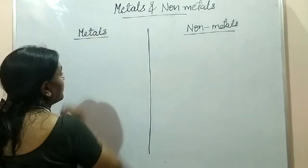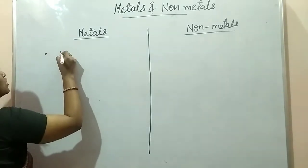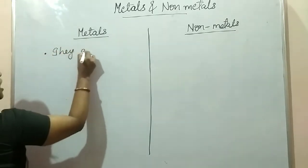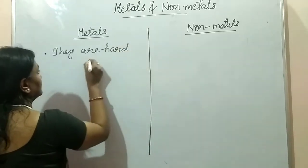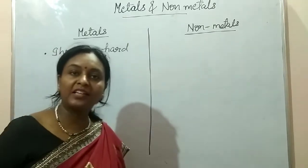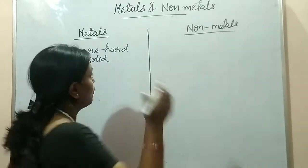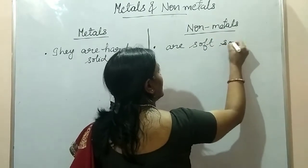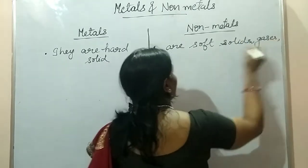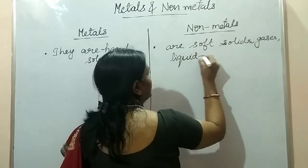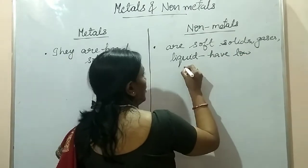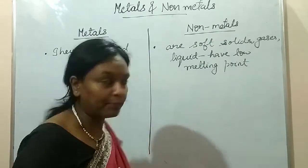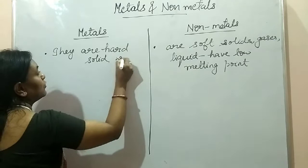Metals are hard solids — you have seen how hard iron and aluminium are. Non-metals, on the other hand, are soft solids or gases; they can even be liquids. Non-metals have a low melting point, meaning they melt at very low temperatures. Whereas metals are hard solids with very high melting points.